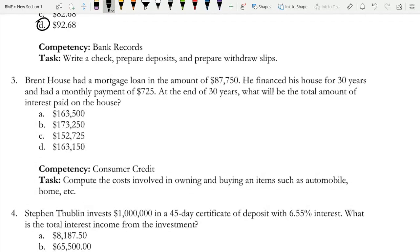Brent House had a mortgage loan in the amount of $87,750. He financed the house for 30 years and had a monthly payment of $725. At the end of 30 years, what will be the total amount of interest paid on the house?